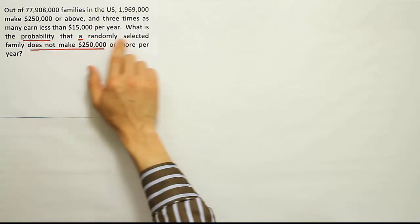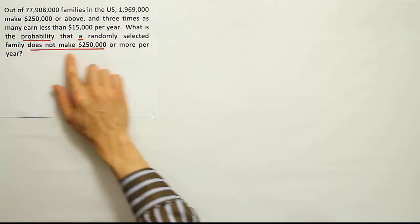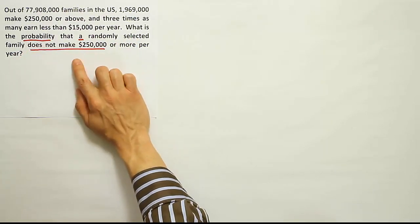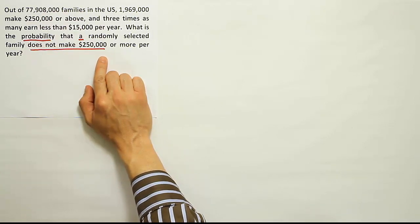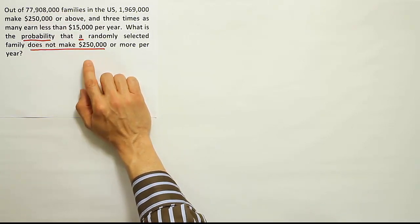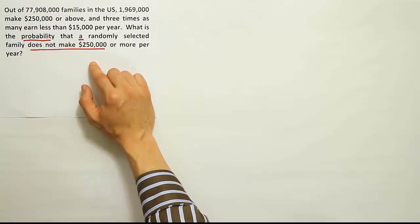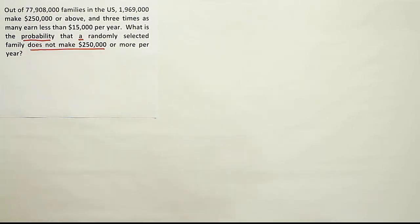When I read further, it says the probability that a randomly selected family does not make $250,000 or more per year. There are no other key phrases present that would indicate doing anything other than a basic probability problem with one fraction to solve it. So what I have to do is find this — that's what we're looking for. Let's start out with that simple approach.